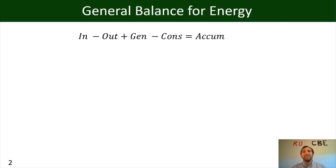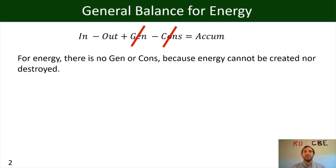One of the interesting features of having an energy balance is that some of these terms can be eliminated immediately — those are, as you guessed, the generation and consumption terms. We can eliminate those right off the bat because energy cannot be created nor destroyed. For that reason, we don't have a generation or consumption term, and our balance simplifies to: in minus out equals accumulation.